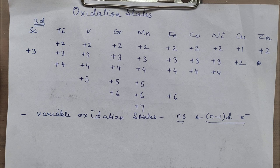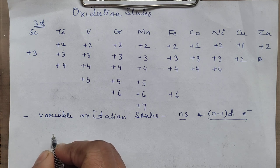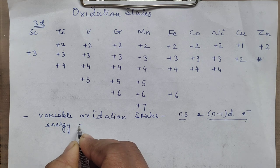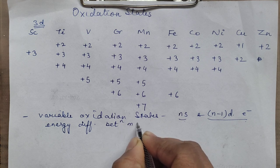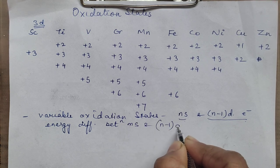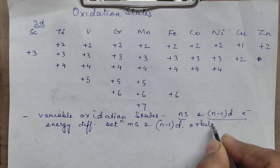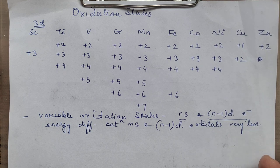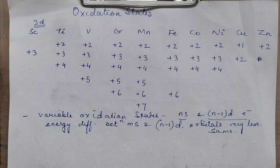Now why do they participate — why in others they do not, only in this particular block? Because the energy difference between Ns and N-1D orbitals is very less. Since the energy difference is very less, or we can say the energy is almost the same, that is why they exhibit a large number of oxidation states.